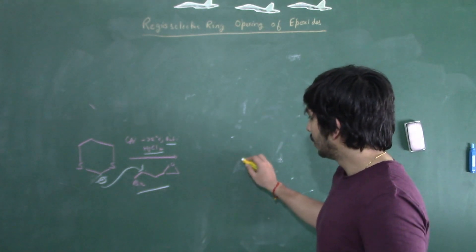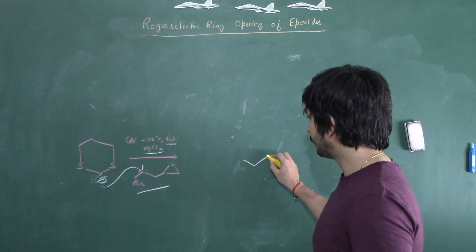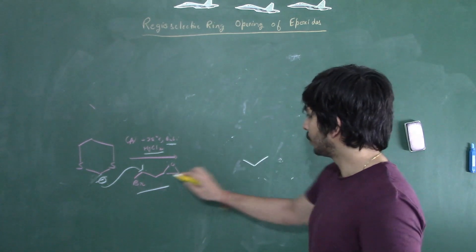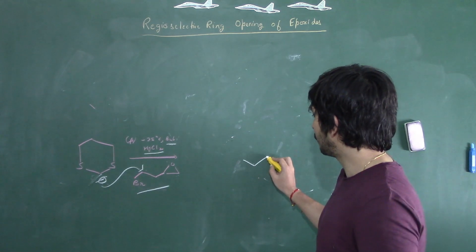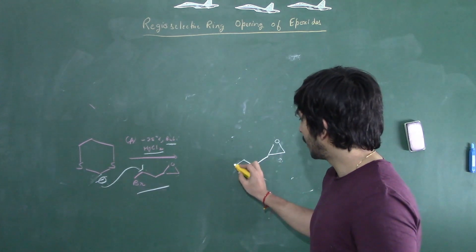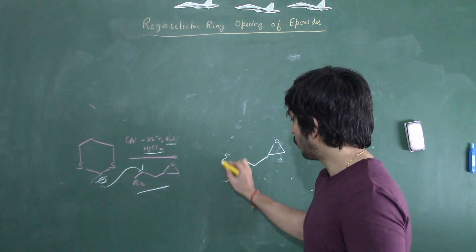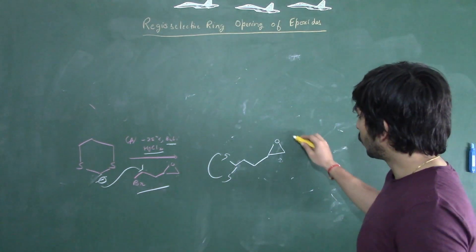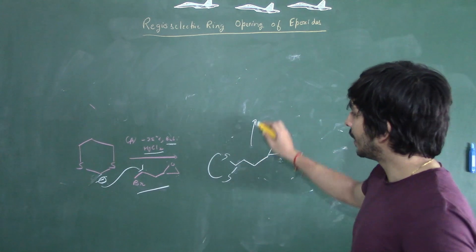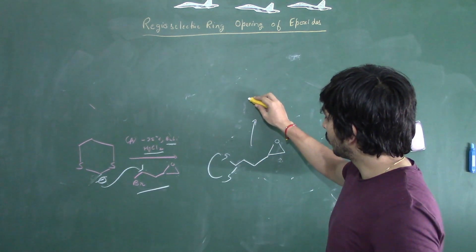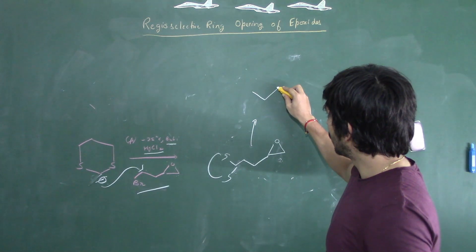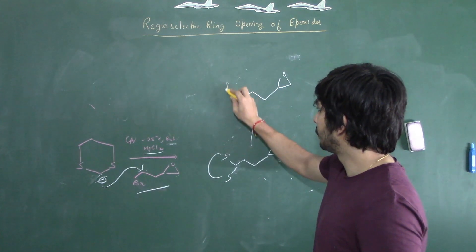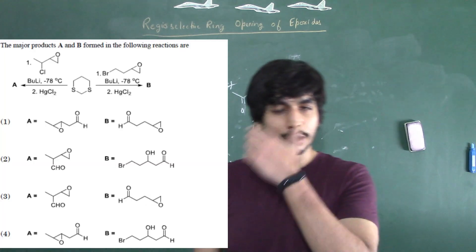So once that attack takes place, we get two carbons with the epoxide still intact, and the dithiane attached. We are again adding HgCl₂, so this will convert the dithiane into an aldehyde. So the product has one, two carbons, then the epoxide, and then the aldehyde. If you look at the options, the correct answer would be option number one.